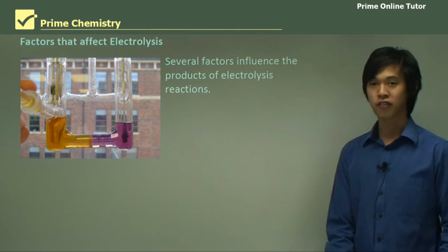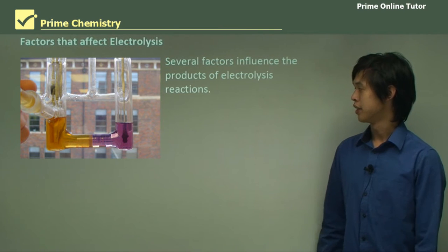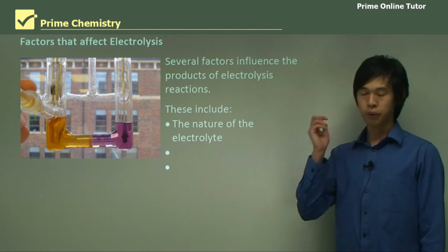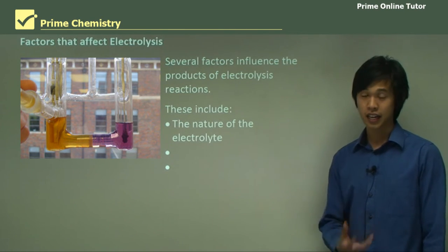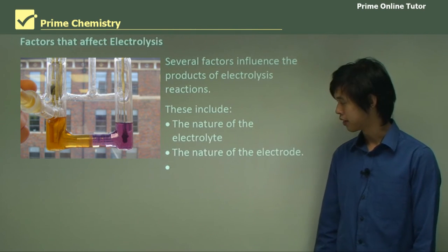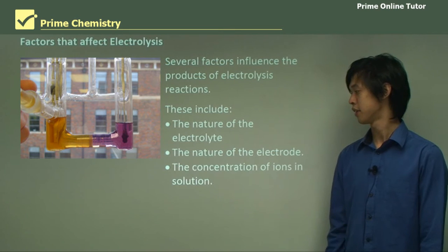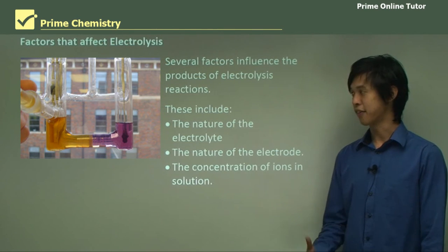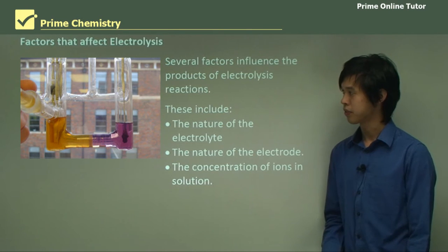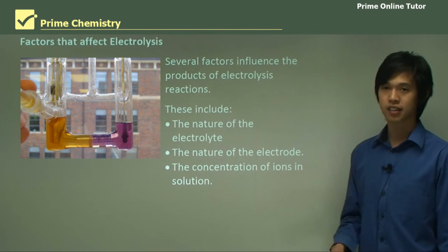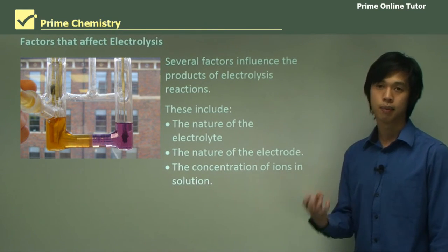We need to know what factors actually affect electrolysis in the first place. These factors include the nature of the electrolyte — what is the electrolyte actually made out of — the nature of the electrode, what is it made out of, and the concentration of the ions in solution. We need to know all three of these things to help predict what the products are going to be.